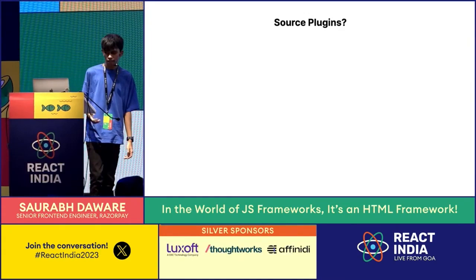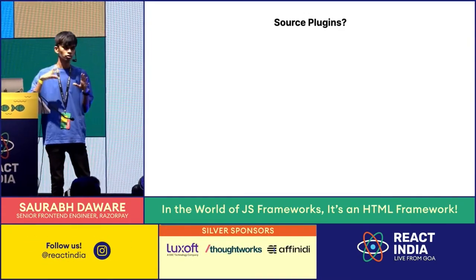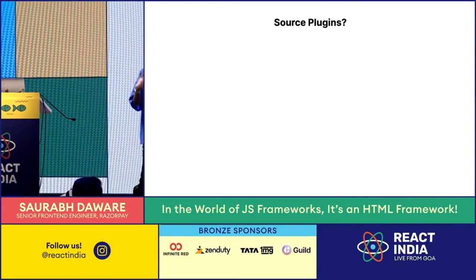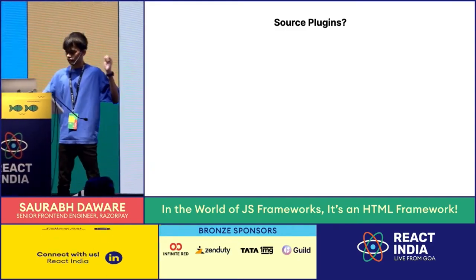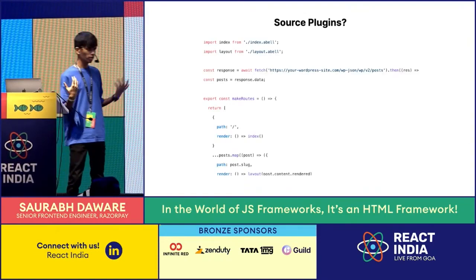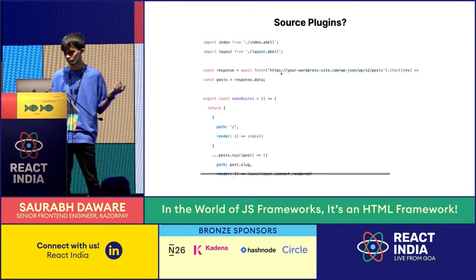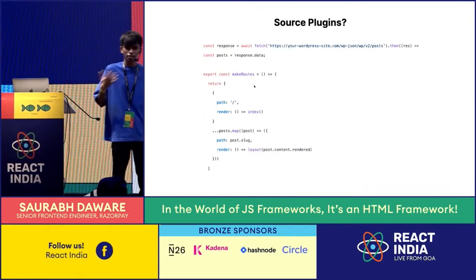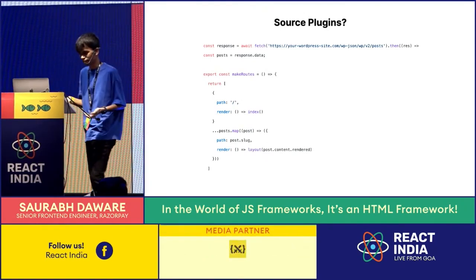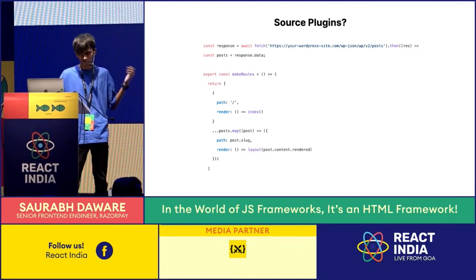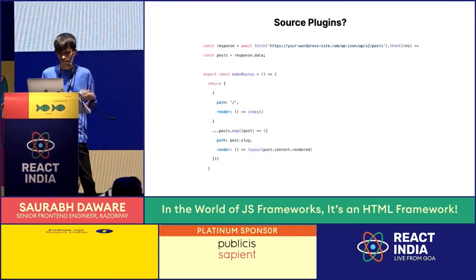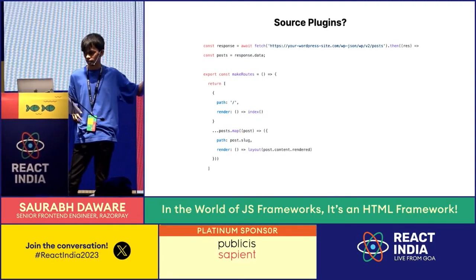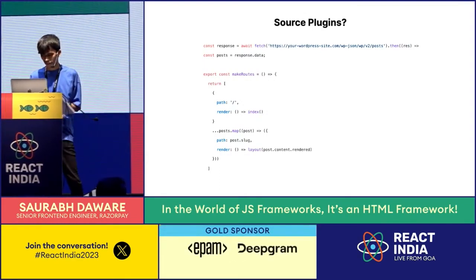Another type of plugins you might have seen in a lot of static site generators is source plugins, where you take content from maybe WordPress, Notion, or Medium — you just want to bring content from somewhere. Remember we talked about the makeRoutes API? makeRoutes API just removes that need itself, because I can go and just call some API and get my content here, and based on the content I can generate routes. So for Abel, you don't really need files — having files is just not the requirement. You can generate content on the go, and this lets you remove the need for source plugins entirely. You can do these things without a plugin, and if you want, you can build libraries on top of it — some high-level abstraction like get WordPress content.